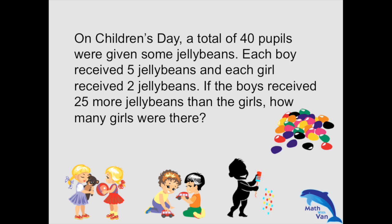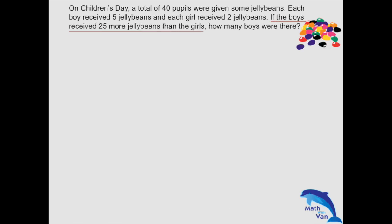So this type of question is slightly different from the usual chicken-and-cows question about total number of legs and total number of animals in a farm, because here the other condition is that the boys receive 25 more jelly beans than the girls. So in this case, we're not referring to the total number of jelly beans — we're referring to the difference between the jelly beans received by the boys and that of the girls.